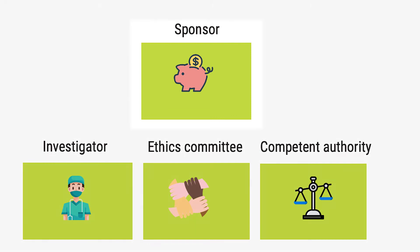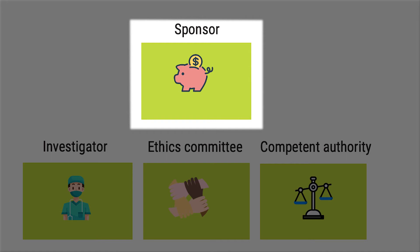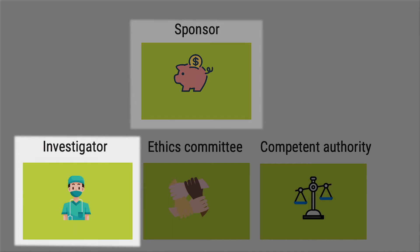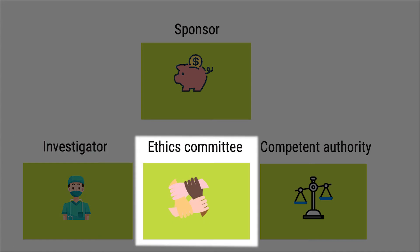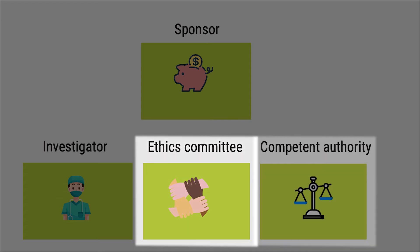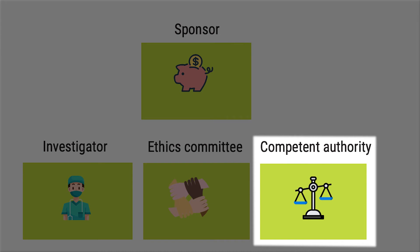The sponsor is ultimately responsible for the clinical investigation — its quality, planning, conduct, and ensuring appropriate communication with regulatory authorities such as the competent authority. The investigator is responsible for the day-to-day conduct of the clinical investigation and must be qualified by education, training, and experience. The ethics committee is the independent body that gives opinions on ethical and scientific matters, and the competent authority is the regulatory body that acts on behalf of the government to ensure legal requirements are applied. Any stakeholder can, often unknowingly, breach the requirements outlined in GCP and the ISO 14155 standard.